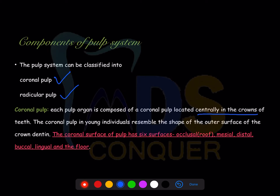This is a question from the NEET examination: the coronal surface of the pulp has six surfaces — one is the roof, one is the mesial side, distal side, buccal, lingual, and the floor. Make a note: the answer is six. The coronal part of the pulp has six surfaces.